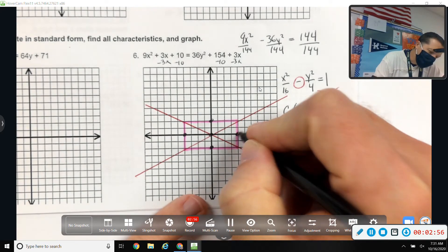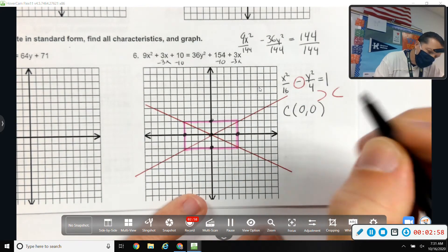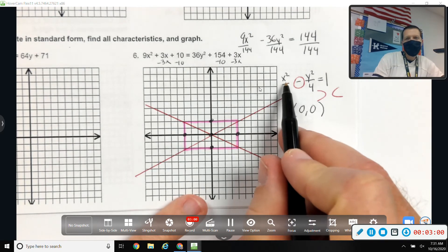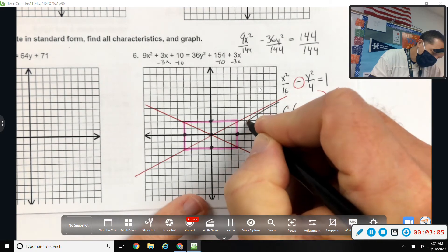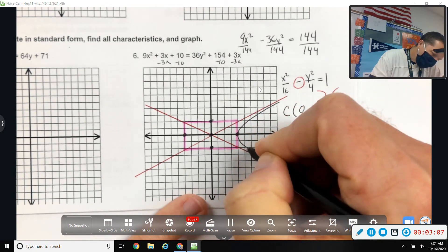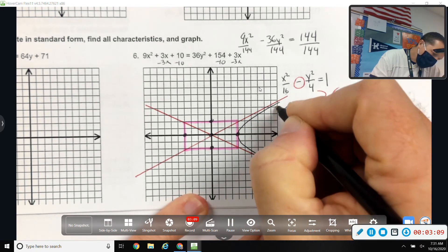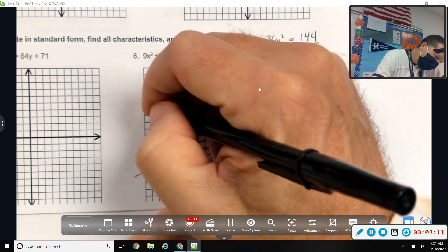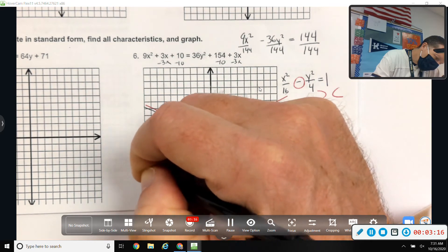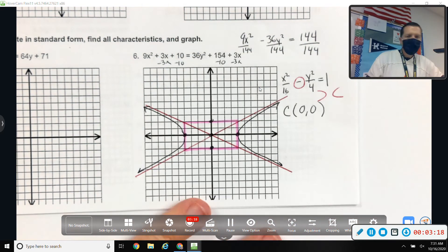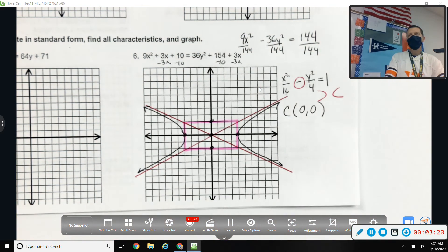Because I've got a vertex and I've got the asymptotes. Double checking, x came first, so that means it's left and right. Something like that for our picture.